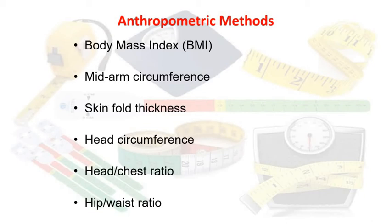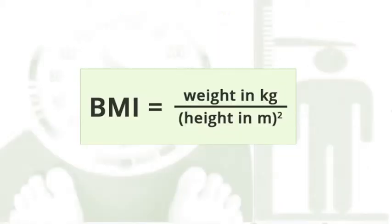In anthropometric methods, we can measure the body mass index (BMI). We commonly measure the mid arm circumference and head circumference. Instruments are available for measuring these methods — measuring strips, which you can see in the background of this screen, as well as weight machines. For calculating body mass index there is a formula: we take the weight of a person in kilograms and height in meters, and using this formula we calculate the BMI of a person.